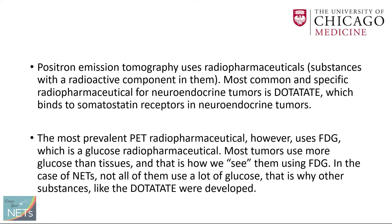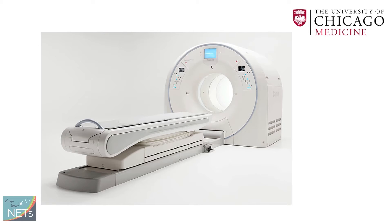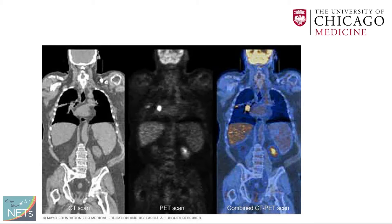Positron emission tomography uses radiopharmaceuticals — substances with a radioactive component — injected into your vein. The most common and specific radiopharmaceutical for neuroendocrine tumors is dotatate, which binds to the somatostatin receptors in neuroendocrine tumors. The most prevalent PET radiopharmaceutical is FDG, which uses glucose bound with a radiopharmaceutical. Most tumors use glucose more than normal tissues, which is how we see them with FDG. However, not all neuroendocrine tumors use a lot of glucose, which is why substances like dotatate were developed. The PET scan is usually combined with CT or MRI to localize where tumors are, and we fuse the images to identify areas of activity.